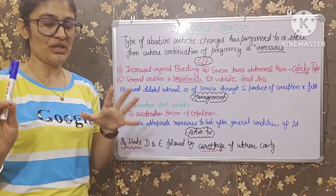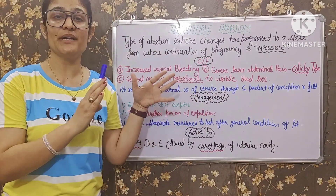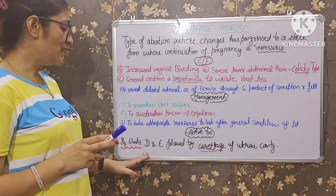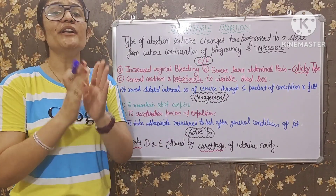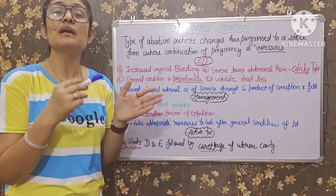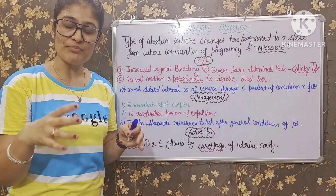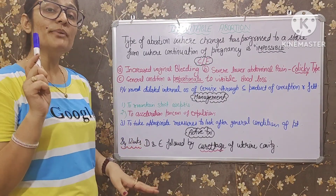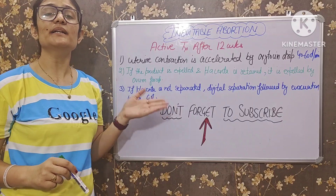Before 12 weeks of gestation: agar gestation 12 weeks se pehle ki hai, to patient ka curettage kara jata hai uterine cavity ka, aur phir dilatation and evacuation (D&E) kiya jata hai. Cervix ko dilate karenge, uterine cavity curate kari jayegi — jo bhi product of conception hai usko evacuate kar diya jayega, bahar nikal diya jayega.